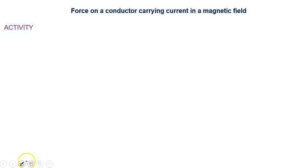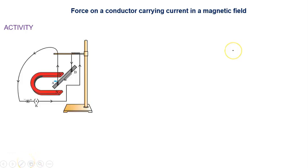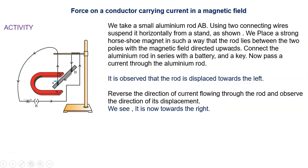We will discuss the force on a conductor carrying current in a magnetic field through an activity. In this activity, we take a small aluminum rod AB. Using two connecting wires, we suspend it horizontally from a stand.